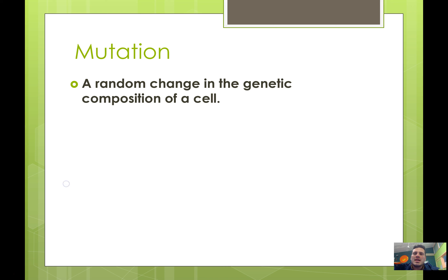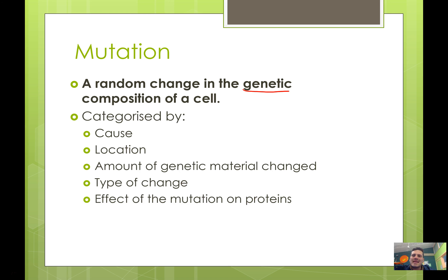The reason why is because of this thing called a mutation. A mutation is simply a random change in the genetic composition of a cell — some kind of change to the DNA of a cell. This is categorised by the cause of the mutation, the location of the mutation, the amount of genetic material that we change, the type of change, and most importantly, the effect of that mutation on specific proteins.